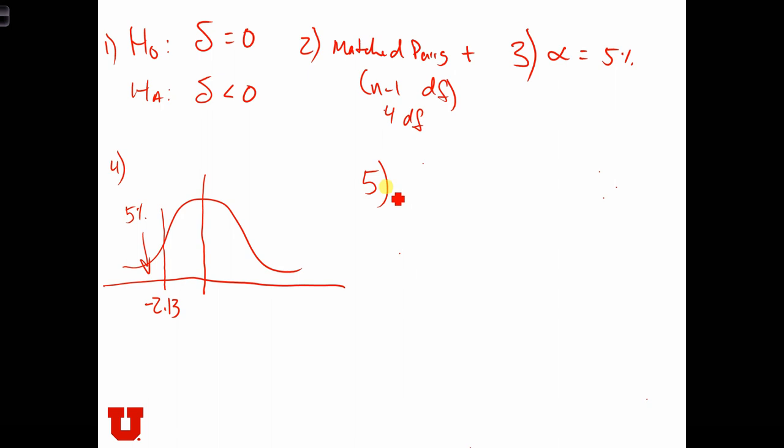So I'm going to go back to where I have more room and calculate the t statistic. So this is now step 5. t, so this is the test, the t test, is going to equal d bar minus the null hypothesized difference, which is this over here, 0, divided by the standard error of the differences, which is minus 13 over 5, minus 0, divided by 0.81, which equals minus 3.21.